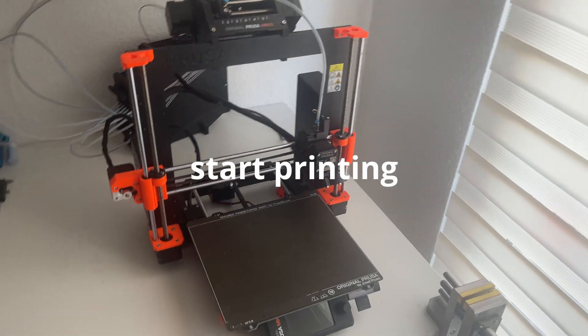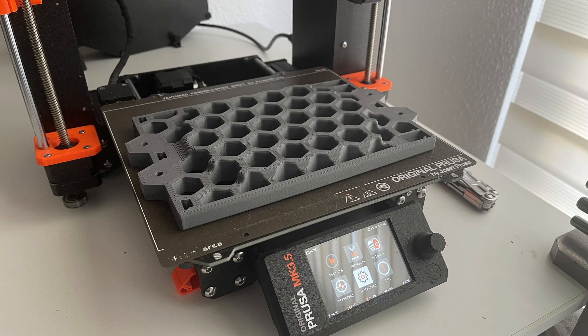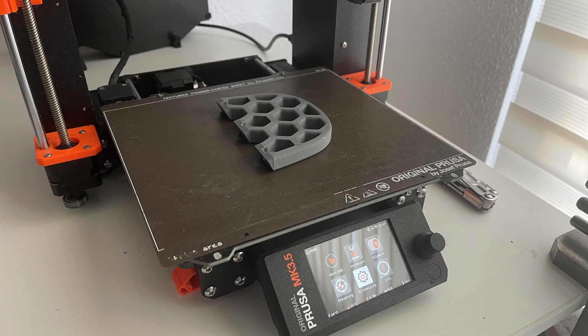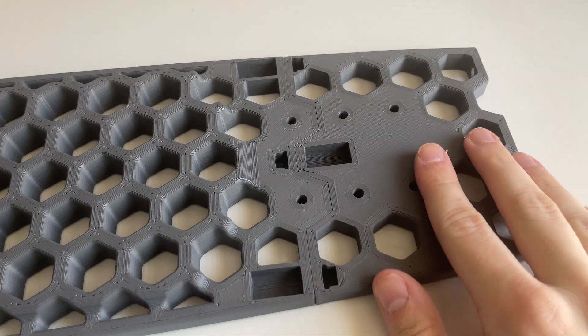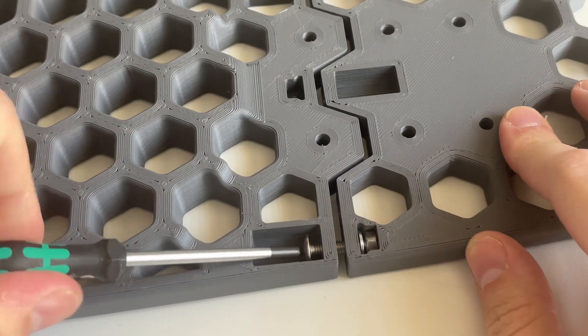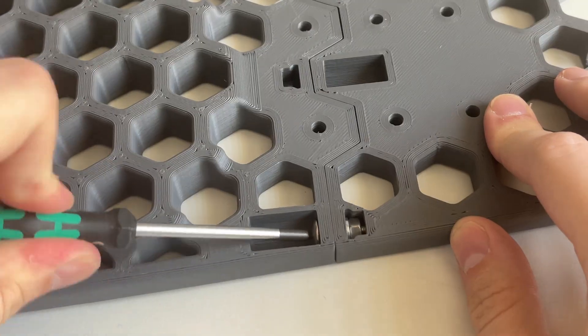Alright, let's start printing. I'm connecting the parts of the skateboard using M5 screws.